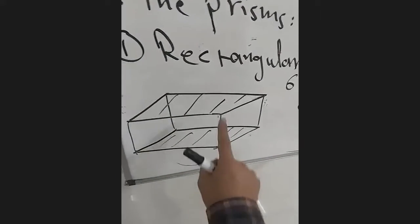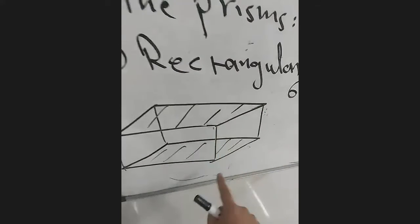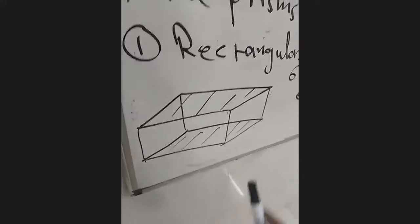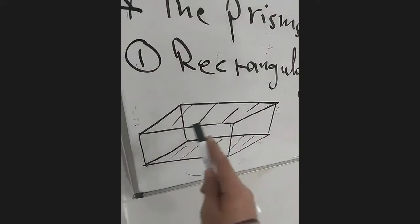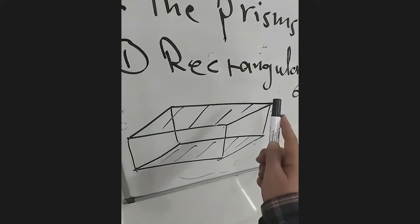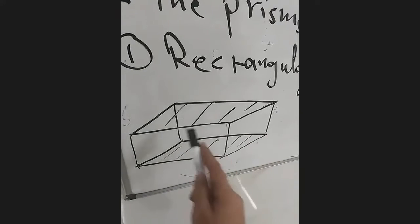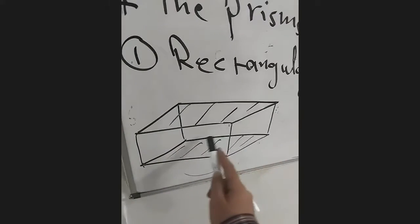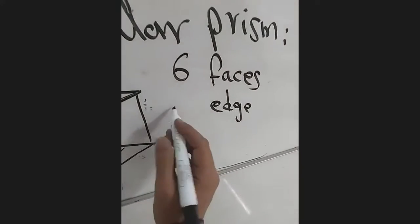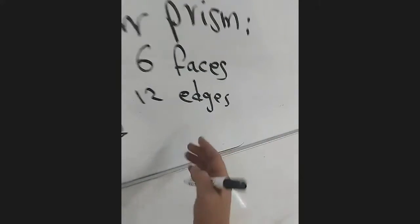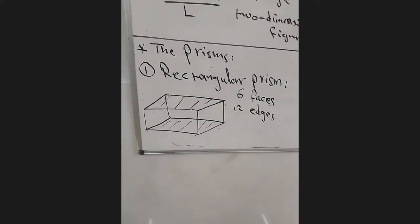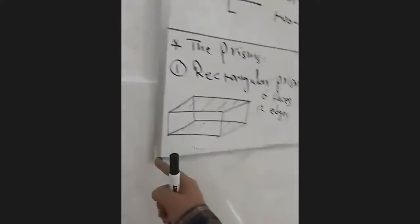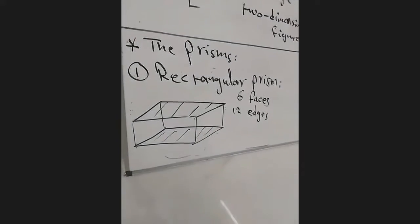Any line segment, any side, we call it an edge. How many sides does this rectangular prism have? Let's count them together: one, two, three, four, five, six, seven, eight, nine, ten, eleven, twelve. So we have 12 edges for the rectangular prism. The edge is the line segment, the side. We have 12 edges for this rectangular prism.